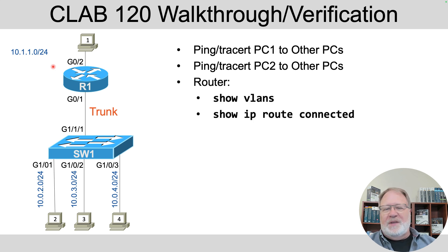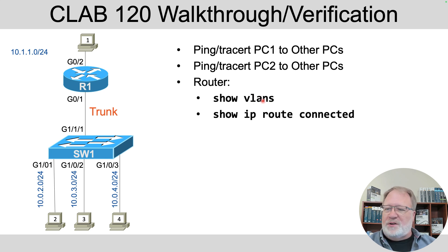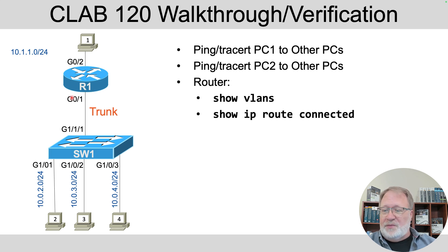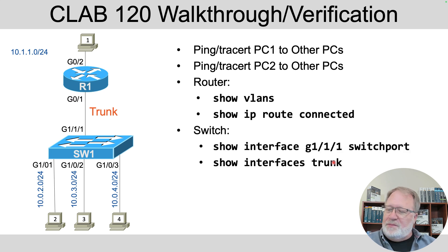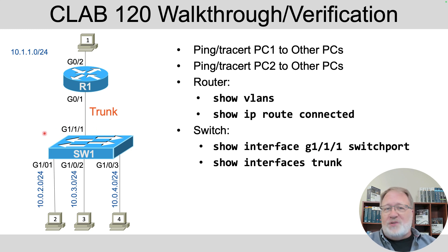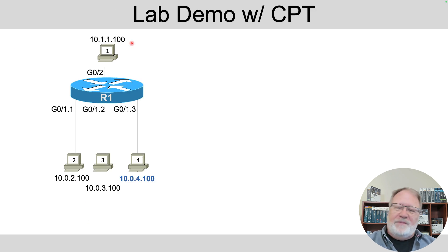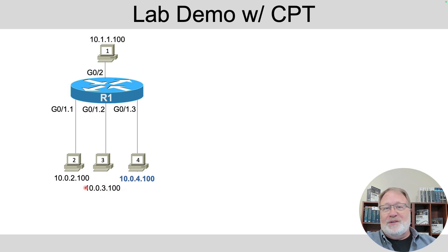I'll do a show run and show you the commands are there. In addition to that, you can do some pings and traceroutes from the PCs to see if it works. On the router, show vlans — plural — is the command that shows details about the router-on-a-stick configuration. Show IP route connected should show you connected routes for all your router-on-a-stick subinterfaces. On the switch, you can verify that the interface is trunking. Proof of the pudding is whether the devices can ping each other.